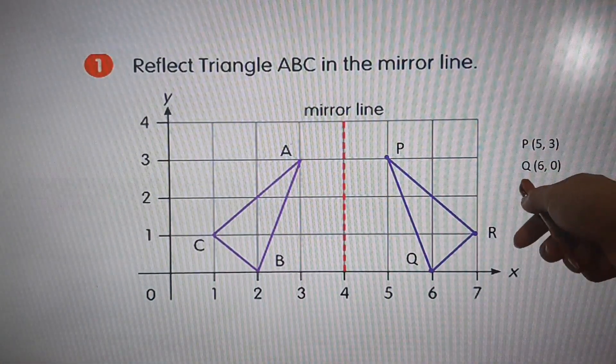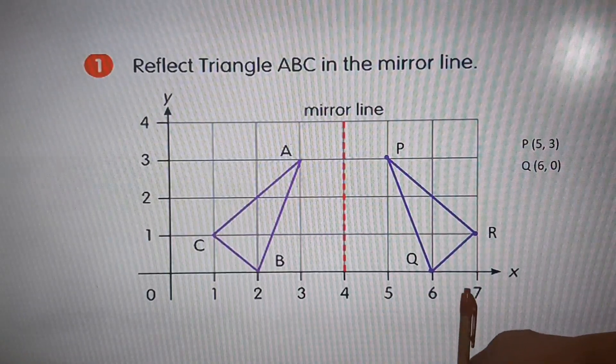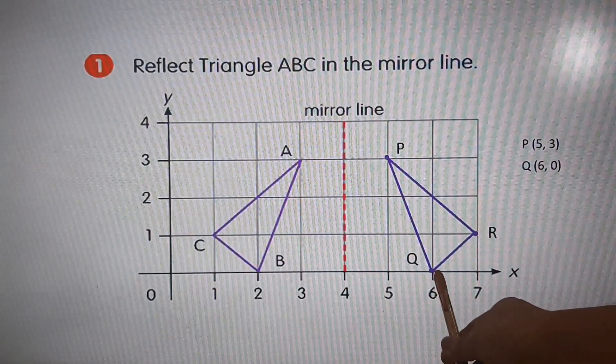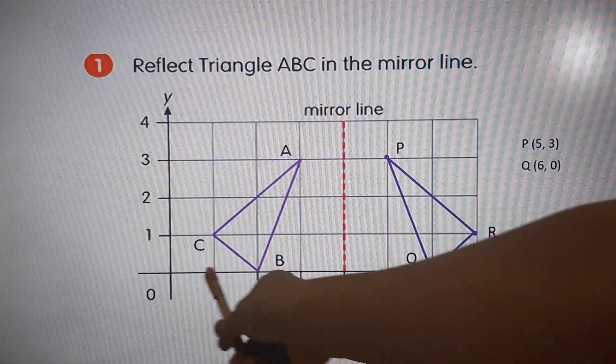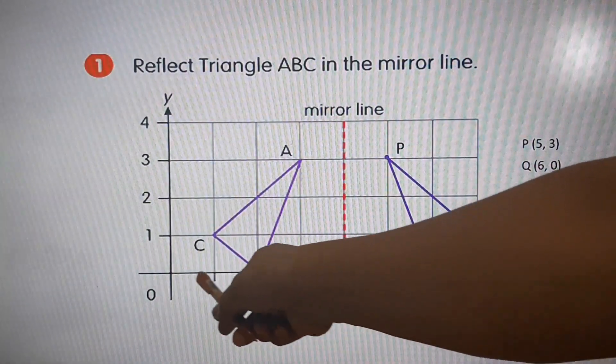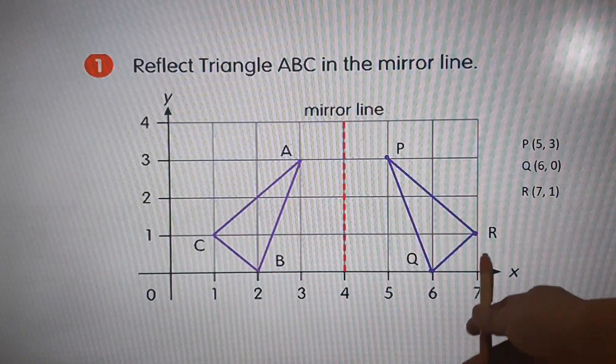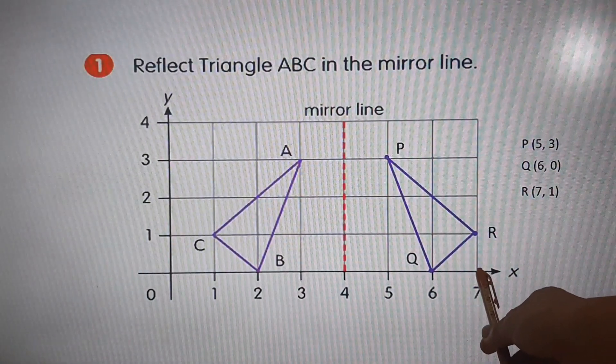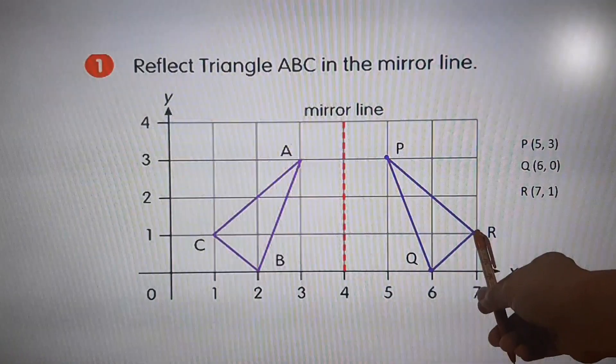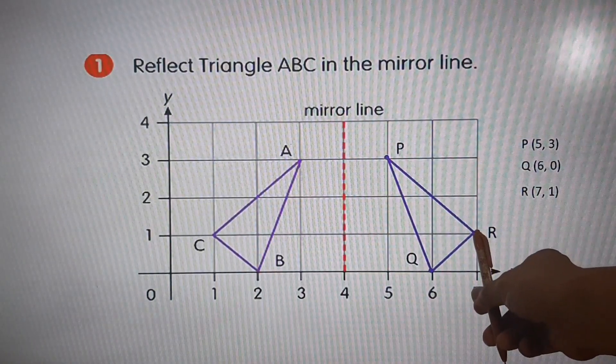And for the Q, six and zero. So, the x-axis is six, and the y is zero. And for R, we have seven, the x is seven, and one for y.